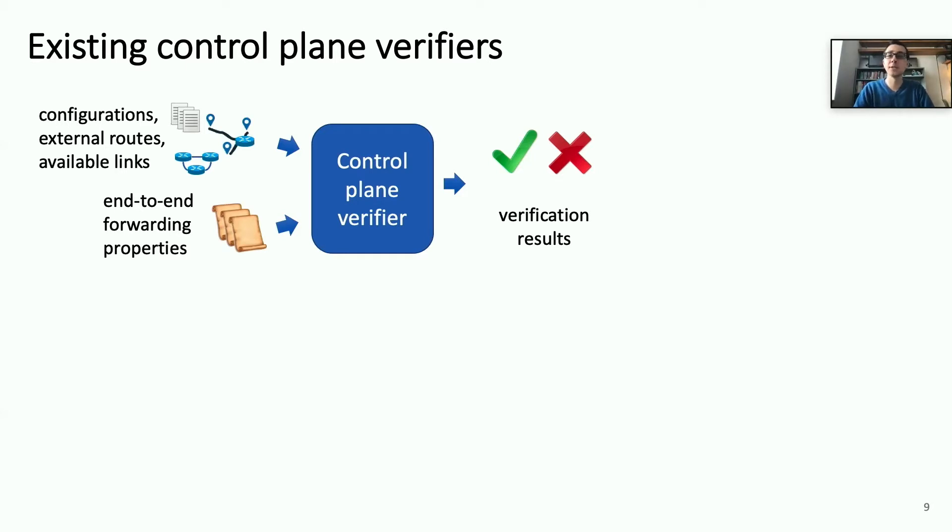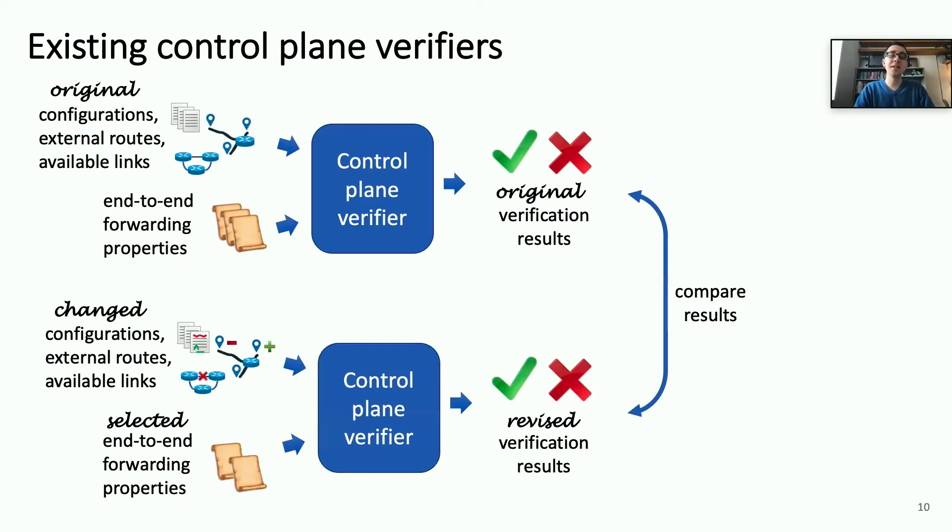They take a snapshot of a network's configurations, external routes, and available links as input, and evaluate whether this snapshot satisfies one or more end-to-end forwarding properties. To assess the impact of a change in control plane inputs, the verifiers have to be run again on the modified inputs. Also, the engineers have to decide which properties to verify to confirm that the changes are safe. For example, if we want to determine whether a change in route filters has unintended side effects, the network engineers have to check reachability between all subnets and compare the original and revised verification results.